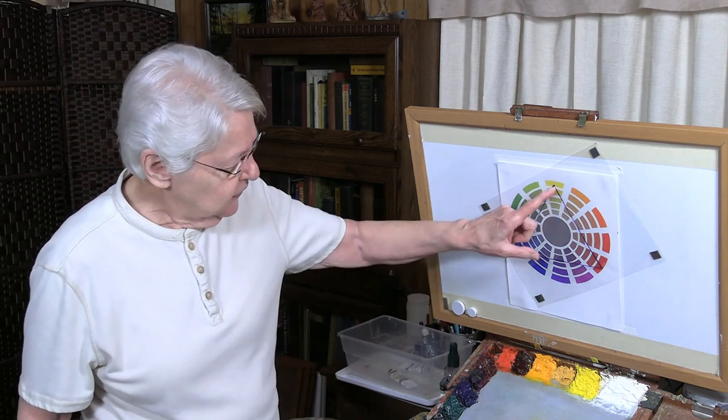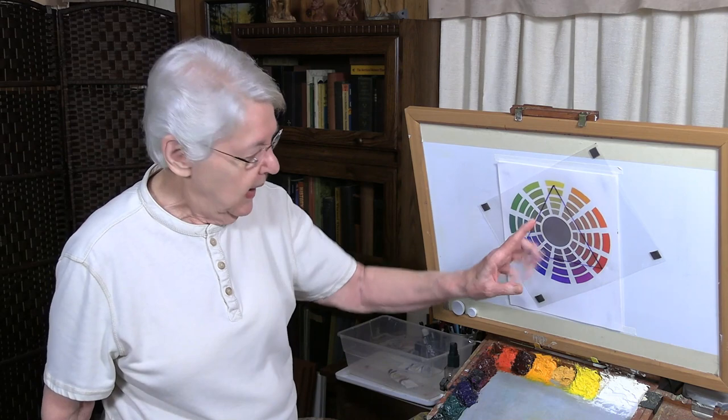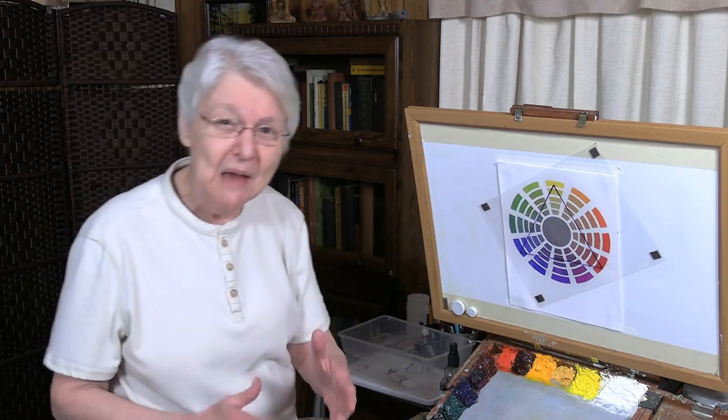The mapping is this. This is a map right here. This triangular shape is the map. And that makes this whole thing gamut mapping.